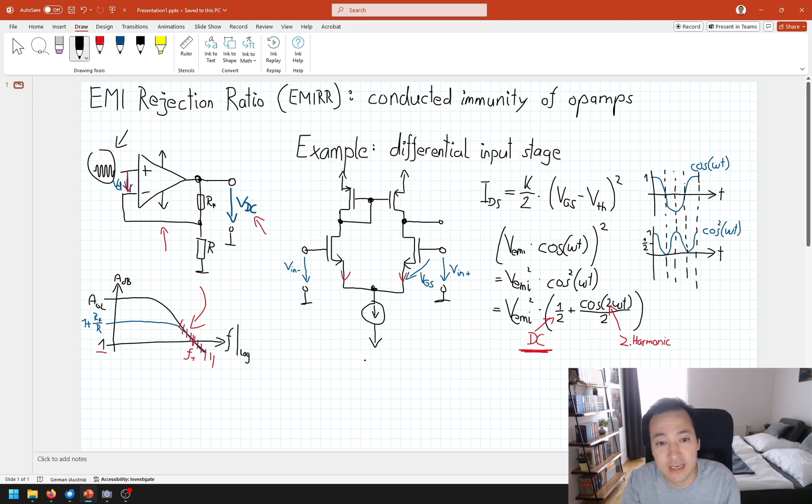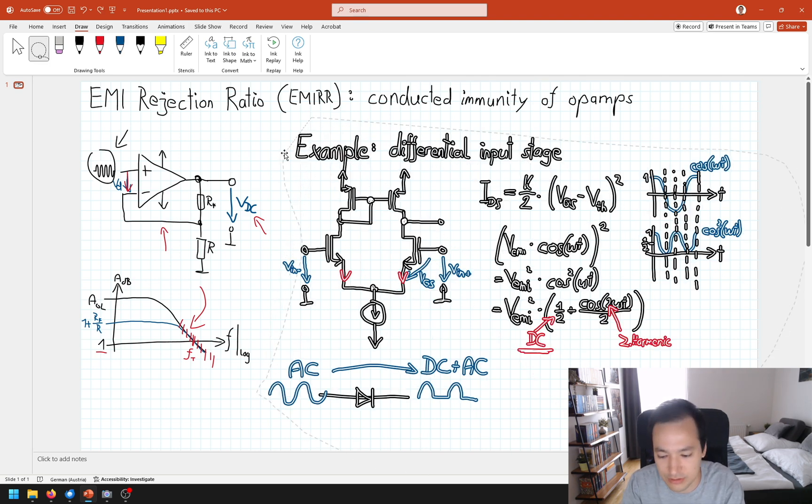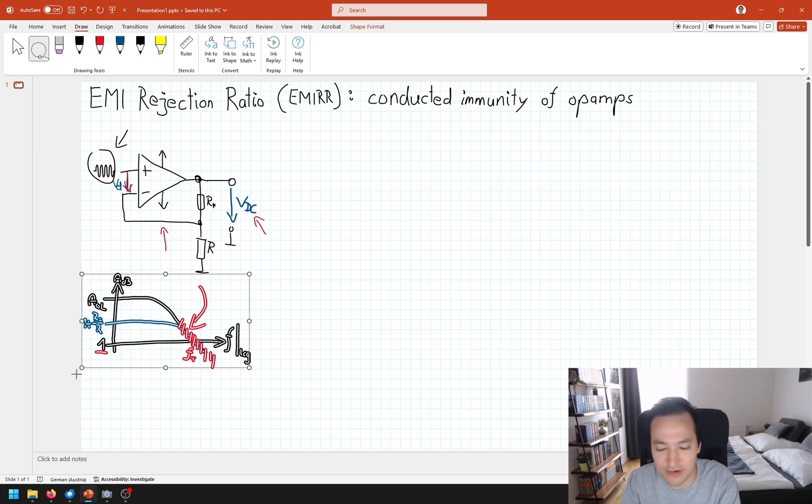But this rectification not only happens at our input stage. Basically at any pin where we introduce our EMI voltage, we can get this rectification. Oversimplified, we can just say we have a lot of PN junctions in our IC. If we now apply a sine wave here, then we expect at the output to see something like this. Our AC signal gets rectified and has now an additional DC component as well. Now with this motivation, let me now introduce the EMI rejection ratio as a figure of merit.